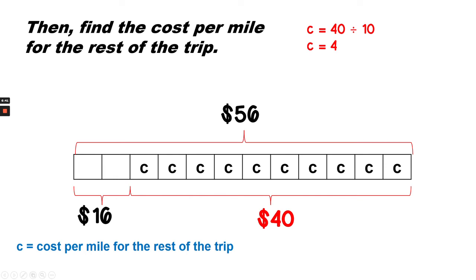Well, there are 10 boxes, and there are 40 in all. So each box, or C, equals 4, because 40 divided by 10 equals 4.